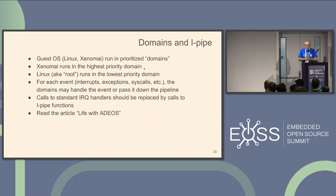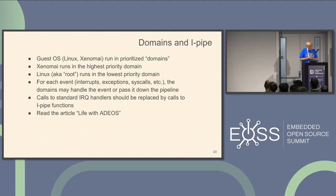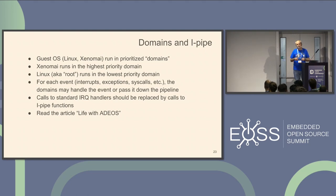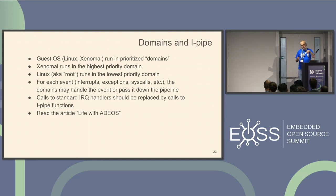Regarding the domains and I-Pipe: the guest OS runs in prioritized domains, and Xenomai runs in the highest priority domain. Linux, which is called root from Xenomai, has the lowest priority domain. For each event — interrupts, exceptions, etc. — the domain handles the event and passes it down to the pipeline. When you modify the kernel for that, you replace the IRQ handler with I-Pipe functions. The initial technology was called ADEOS, designed by Karim Yaghmour and Philippe Jérôme. It was then called I-Pipe, and now Dovetail for the newer technology.